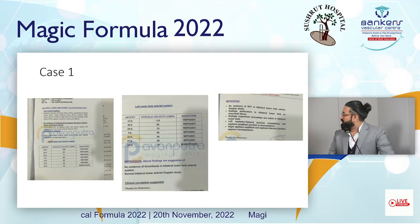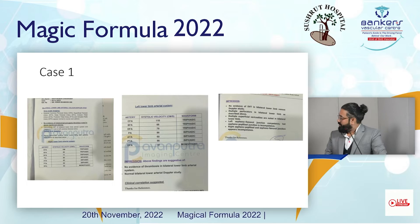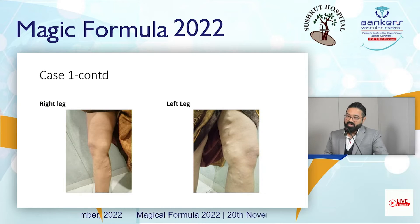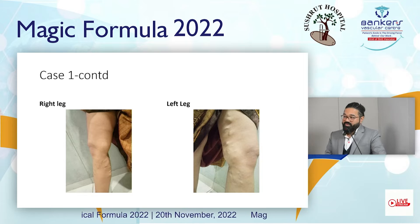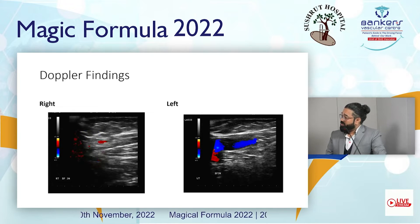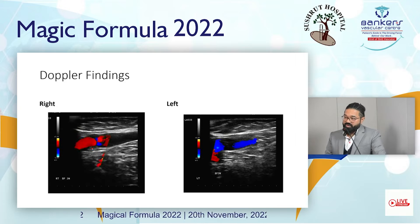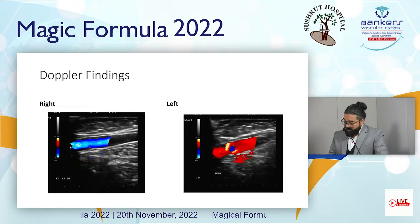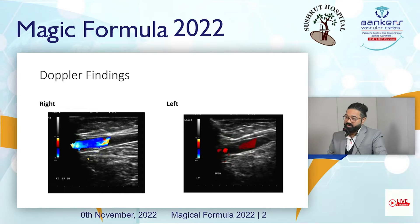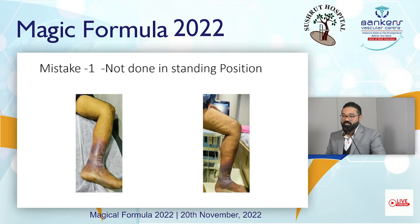Here is Case 1. The report states that the left saphenofemoral junction shows competence and the right shows incompetence. We examined the patient clinically in the standing position. You can clearly see varicose veins on the right side below the knee region, and also in the thigh and below-knee region of the left leg. On color doppler at the femoral junction, we see reflux on the right side — as written in the report. On the left side, there is also reflux at the left saphenofemoral junction, which is also incompetent. Why was this missed? Because it was not done in the standing position. Position is important.